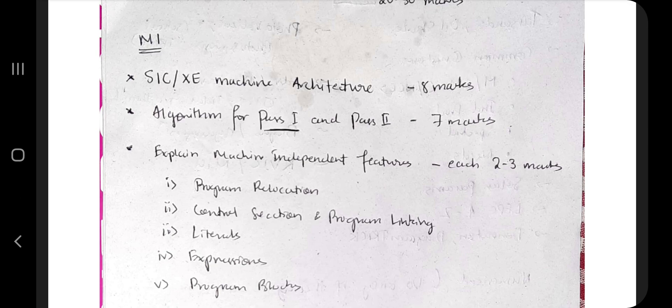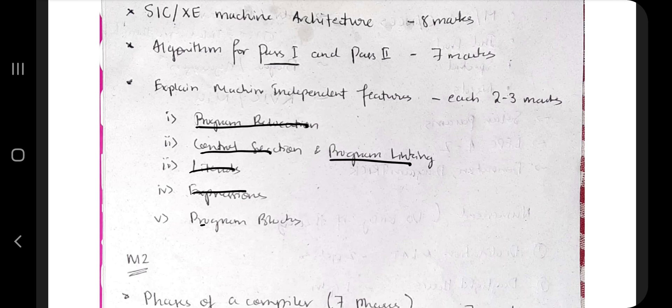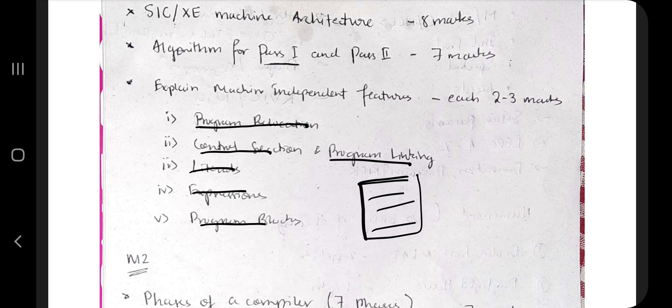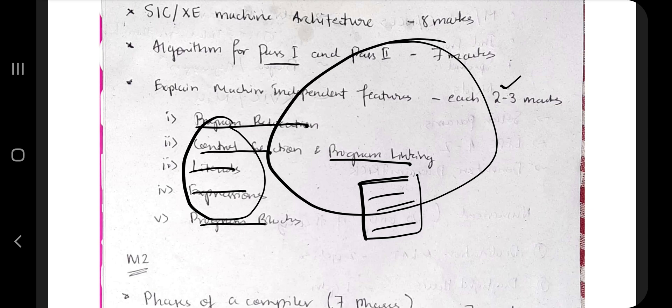After those two, go to the third part. In the third part you have small topics like: program relocation — what does it mean and how is it relevant to system software; control section; program linking; literals; expressions; program blocks — along with the syntax and example. There is also a code snippet but you can skip that for now and focus on the theoretical concepts. You can get two to three marks each, so around 16 marks here.